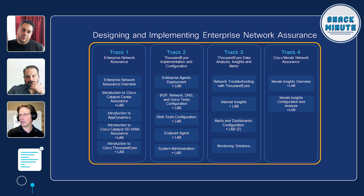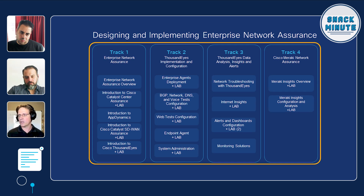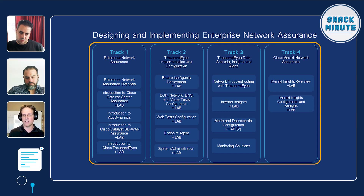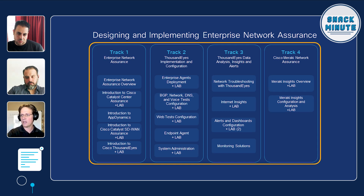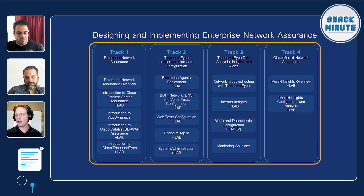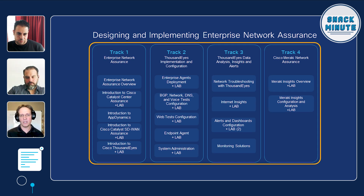Moving on, Track 3 covers ThousandEyes data analysis, insights, and alerts. The first course is network troubleshooting with ThousandEyes — you'll work through scenarios to identify and isolate issues using ThousandEyes. From there we look at Internet Insights, setting up alerts and custom dashboards, and monitoring solutions. Track 4 is a dedicated track to Cisco Meraki Network Assurance, with a couple of courses and labs as well. That's what the training for the Enterprise Network Assurance course looks like.